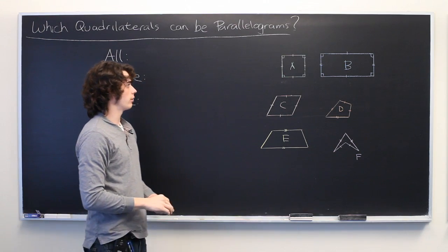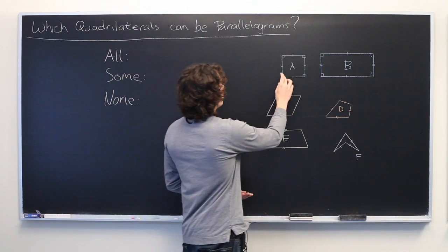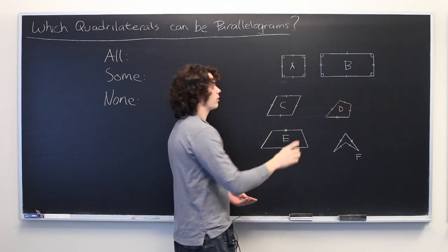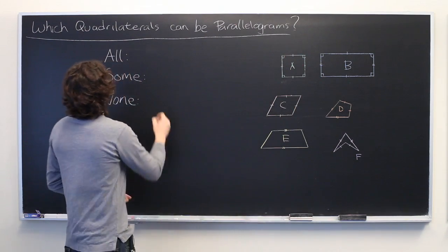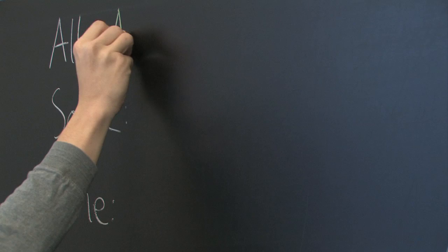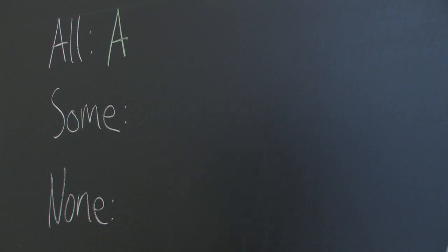We'll start with the square. Well, since all of the interior angles are 90 degrees, it immediately follows that opposite sides will be parallel, no matter what. So, we can safely say that all squares are parallelograms.